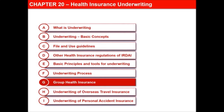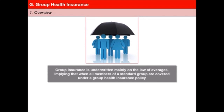In this next video of the lesson, Health Insurance Underwriting, we will learn about group health insurance. Group insurance is underwritten mainly on the law of averages, which implies that when all members of a standard group are covered under a group health insurance policy, the individuals constituting the group cannot anti-select against the insurer. Underwriting of group health insurance requires analyzing the characteristics of the group to evaluate whether it falls within the insurance company's underwriting guidelines, as well as under the guidelines laid down by the insurance regulators.